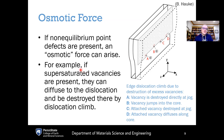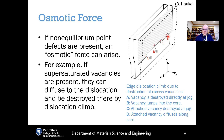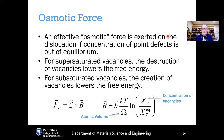For example, if supersaturated vacancies are present — if you have too many vacancies locally — they can diffuse to the dislocation and be destroyed there by causing dislocation climb, as we will see a bit later in this lecture. Various possibilities for edge dislocation climb due to the destruction of excess vacancies include: a vacancy can be destroyed directly at a jog in the dislocation, the vacancy can jump into the dislocation core, an attached vacancy can be destroyed at the jog, or can be diffused along the core itself.